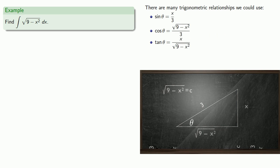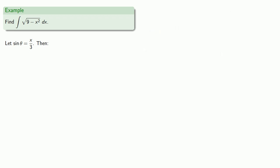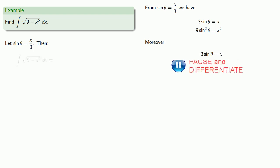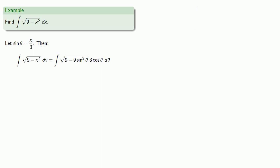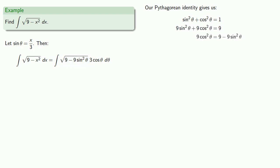We'll start with the simplest relationship: sine of theta equals x over 3. At this point, we have to do a lot of trigonometry, a lot of algebra, and a tiny bit of calculus. From sine theta equals x over 3, we have x equals 3 sine theta. We also need to handle the differential; differentiating 3 sine theta equals x gives dx equals 3 cosine theta d-theta. We'll do a bunch of substitutions. To simplify, we pull in the Pythagorean identity for sine and cosine, multiply by 9, and do a little algebra.